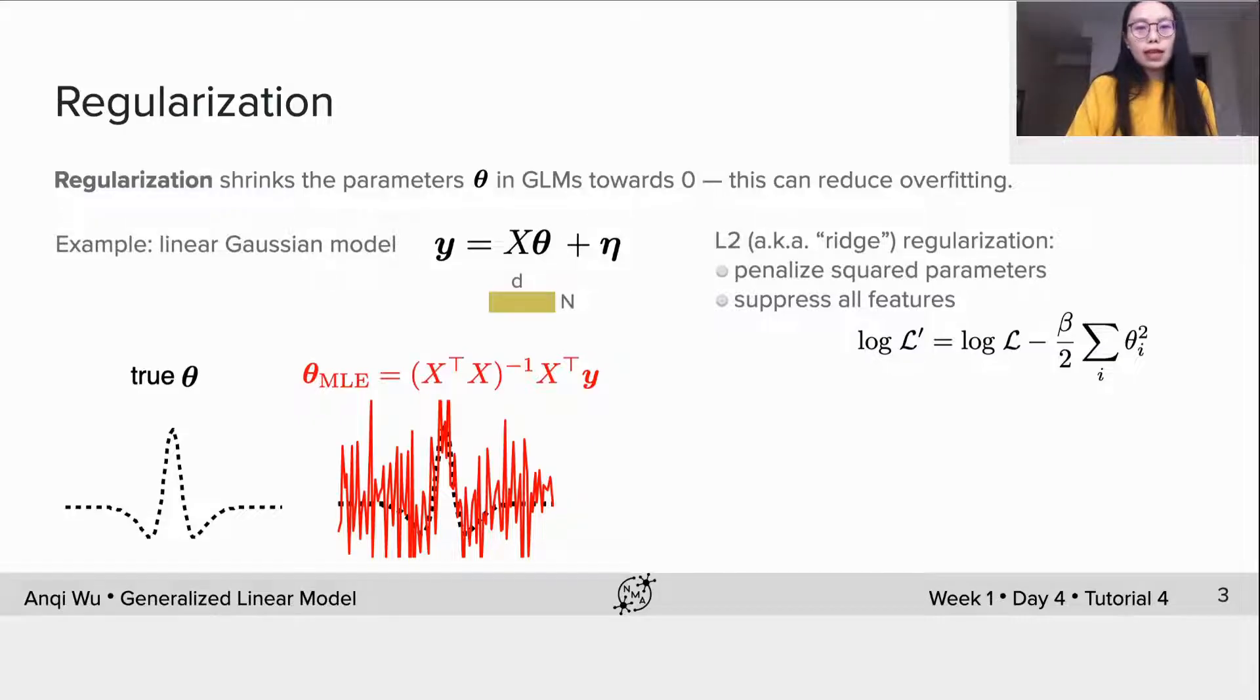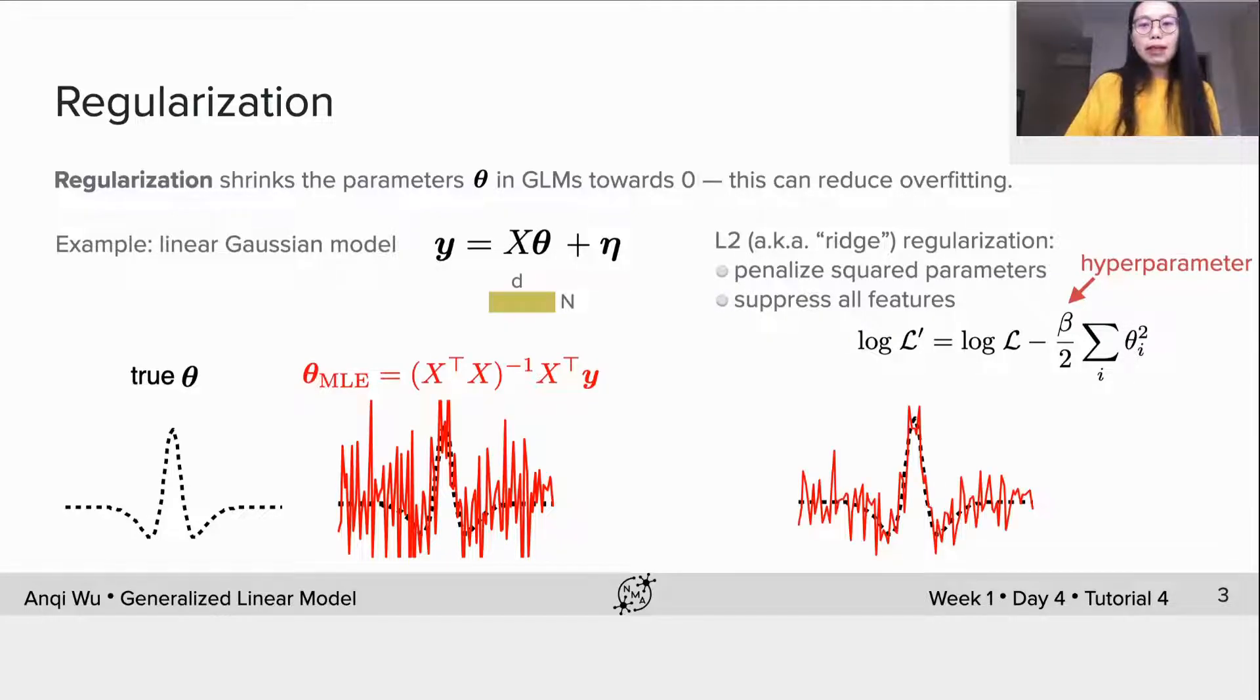Thus, the maximization of L' is a balancing between these two terms. Beta is named as hyperparameter in regularization, and with such a penalty term, the estimate of theta would have smaller magnitude, thus generalizes better.